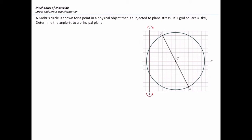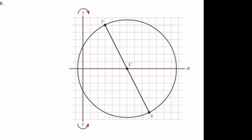Before going further, I would like to ask you a quick question. Assume that we have this Mohr circle. If one grid counts for 3 KSI, determine the angle of theta P. So we want to see how much would be theta P for this Mohr circle. These are two points that we have, and you can determine the coordinate from the figure.